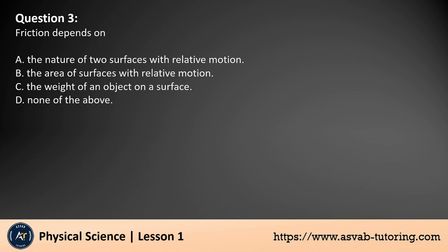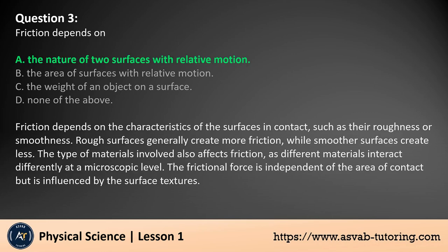Question 3: Friction depends on A. The nature of two surfaces with relative motion, B. The area of surfaces with relative motion, C. The weight of an object on a surface, D. None of the above. The answer is A. Friction depends on the characteristics of the surfaces in contact, such as their roughness or smoothness. Rough surfaces generally create more friction, while smoother surfaces create less. The type of materials involved also affects friction, as different materials interact differently at a microscopic level. The frictional force is independent of the area of contact, but is influenced by the surface textures.